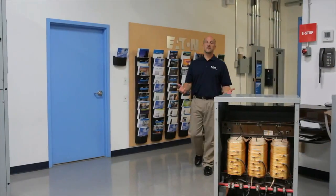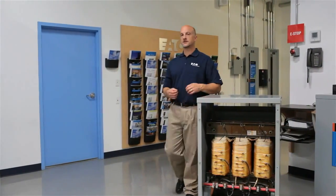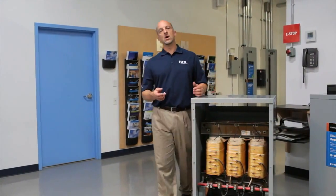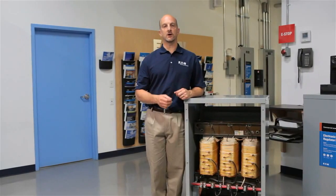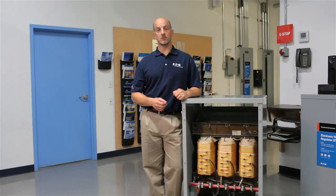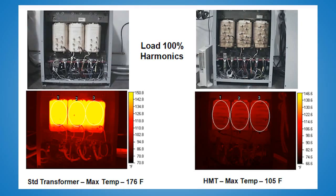The effects of harmonic distortion can appear in several ways. Overheating of equipment is a very common result of harmonics. In commercial applications, harmonic current causes the transformer's core and windings to overheat. Over time, this will progressively damage the transformer, resulting in premature failure.